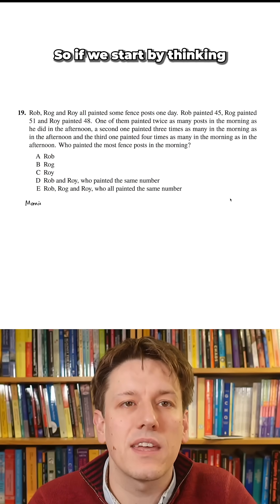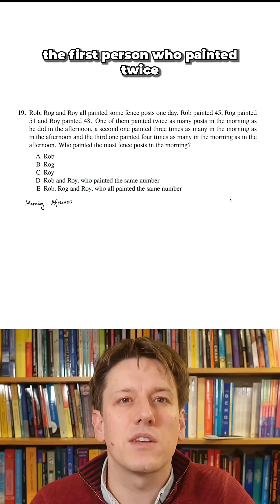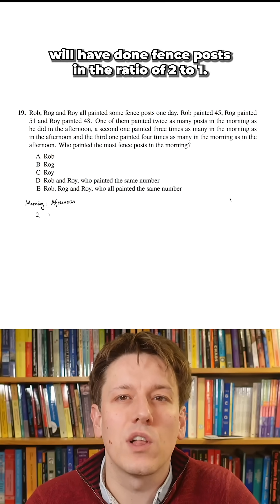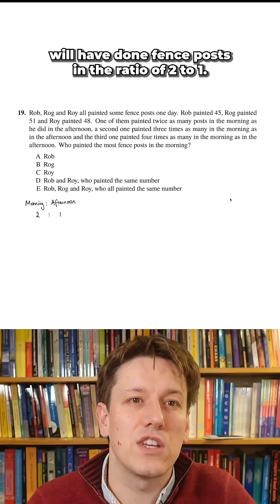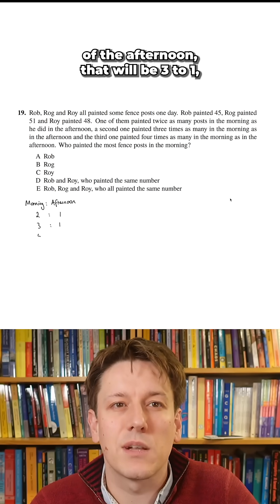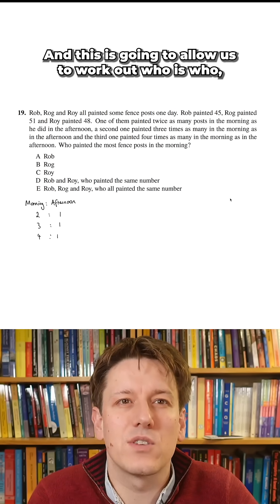If we start by thinking about the information we're given here as ratios, the first person who painted twice as many posts in the morning as he did in the afternoon will have done fence posts in the ratio of two to one. The one who did three times as many in the morning as the afternoon will be three to one and the final one will be in the ratio of four to one.